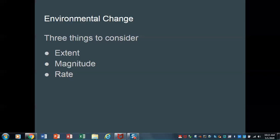We want to understand that in terms of these three variables: extent, magnitude, and rate. Extent means how broad or over what geographic area does the change occur.